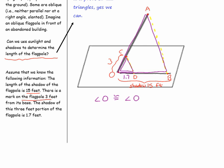We need one more angle to prove similarity. Since these lines are parallel, that creates corresponding angles. So angle ODC is congruent to angle OBA. By the angle-angle criterion, we now know that these are similar triangles.